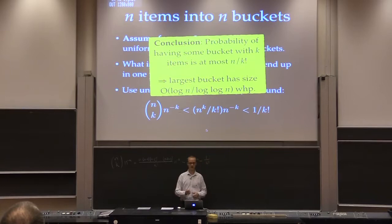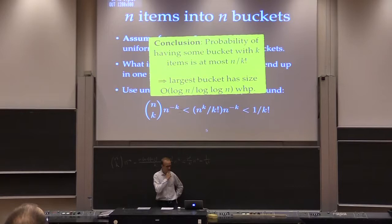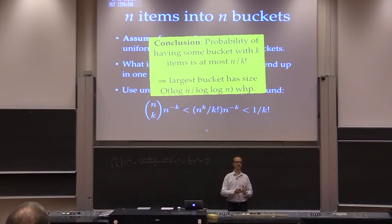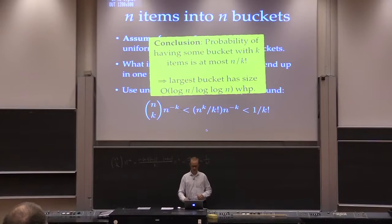That's a factorial, not an exclamation mark. How large does k have to be for this to be very small? The answer turns out to be around log n divided by log log n. You can do the math with Stirling's approximation to the factorial, for example. So the largest bucket has size log n over log log n.